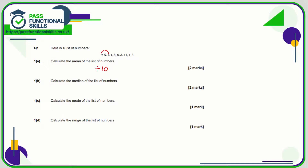but I would combine the 9 and the 1 because that makes 10. 8 and 2 makes 10, and 4 and 6 makes 10. So there we've got 30, 35, 39, 50, 53. So 53 divided by 10 is 5.3. That's the mean.